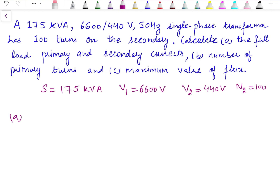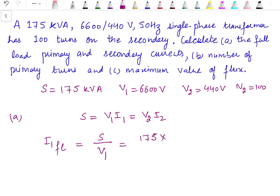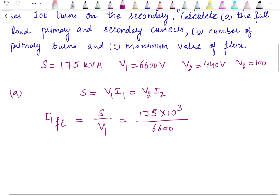To calculate the full load primary and secondary current, we use S = V × I. Since S is the same on primary and secondary side, S = V1 × I1 = V2 × I2. For full load primary current: I1 = S / V1 = 175 × 10³ / 6600, which gives us the full load current on the primary side as 26.52 amperes.